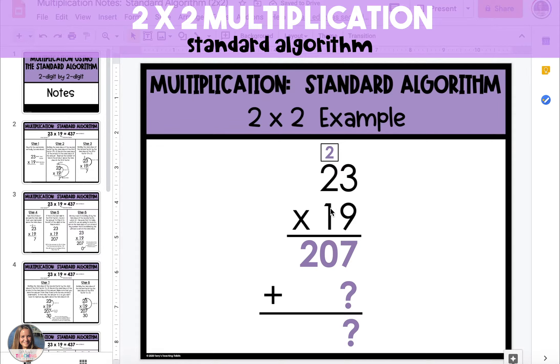Next, we have to multiply the 1 ten in 19 by 23. To do this, we start by putting a 0 in the ones place of our second product. We do this because any time you multiply a number by a multiple of 10, the answer will have a 0 in the ones digit.